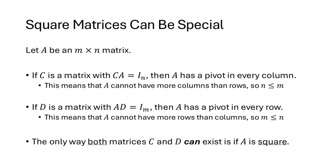So for an m by n matrix A: if there is a matrix C with CA = I, then A has a pivot in every column and can't have more columns than rows. If there is a matrix D with AD = I, then A has a pivot in every row and can't have more rows than columns. The only way to have a pivot in every column and every row is if the number of rows and columns are the same — meaning A would have to be square. These are the invertible matrices we'll spend quite a bit of time on in the next lecture.